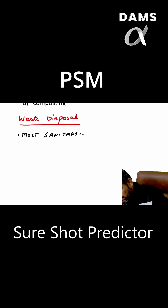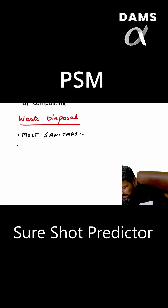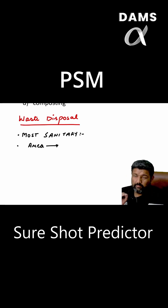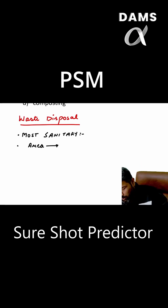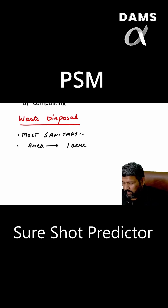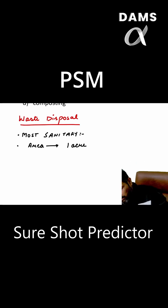Now, the next question they ask: how much area of land is required? One acre of land is required for 10,000 people.